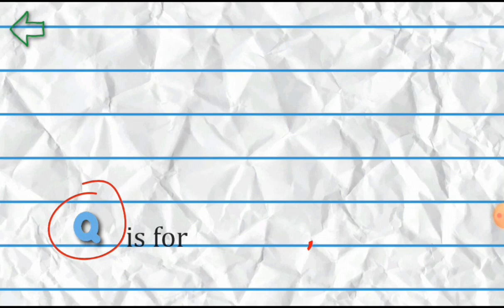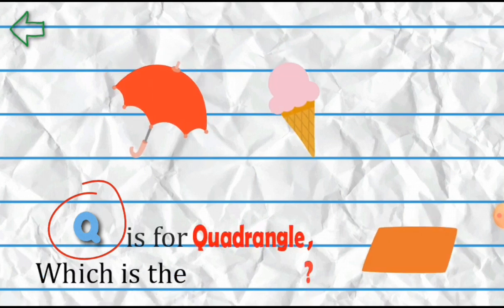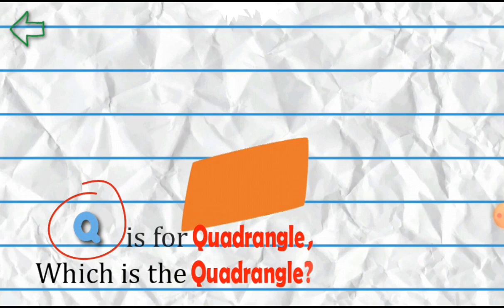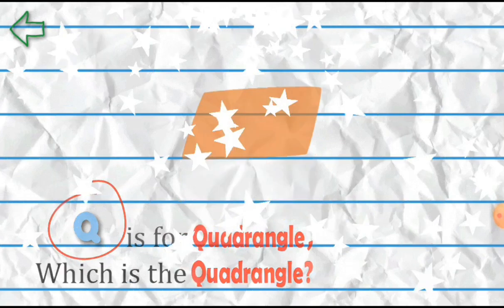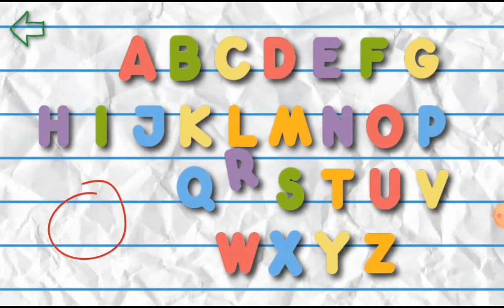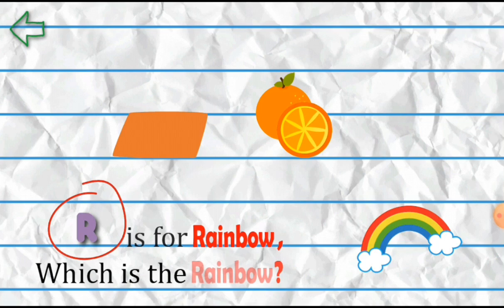Q is for Quadrangle. Which is the quadrangle? R is for Rainbow. Which is the rainbow?